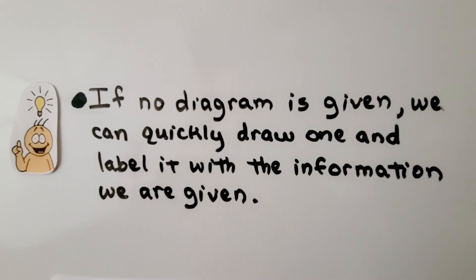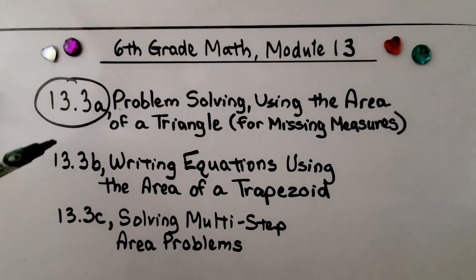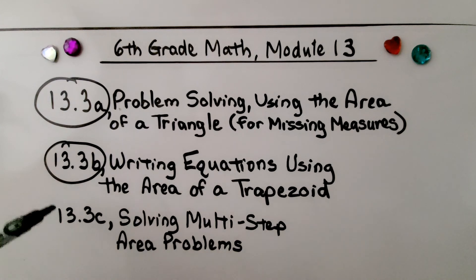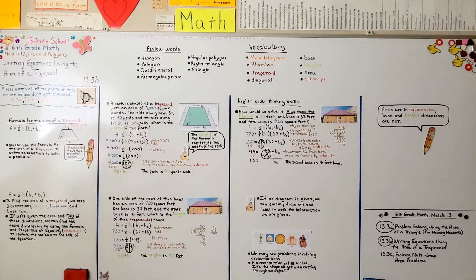Keep in mind, if no diagram is given, we can quickly draw one and label it with the information we are given. We're finished with the second part of this lesson. We're going to move on to the last part, solving multi-step area problems. I have links to those previous videos in the description. If you're ever confused, you can always go back, regroup, watch them quickly, and then come forward again. Have a great day. Bye!